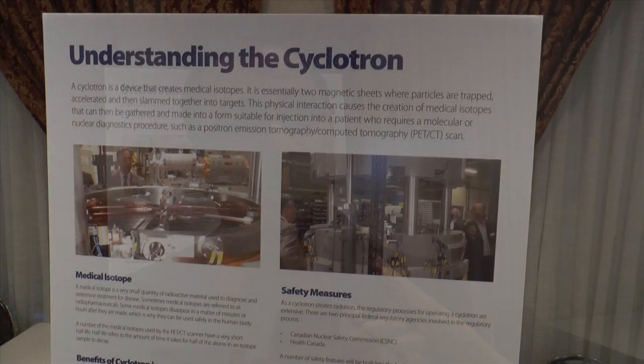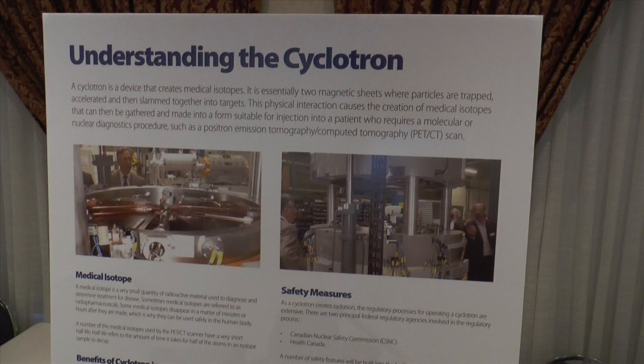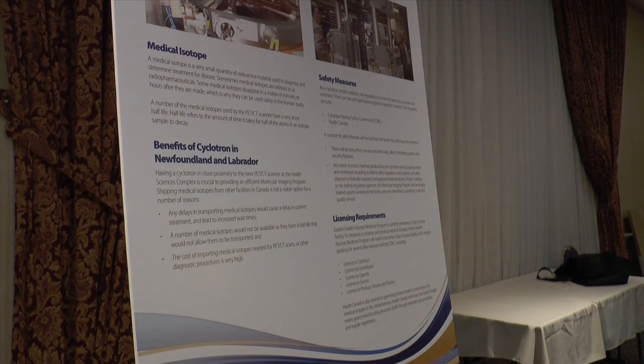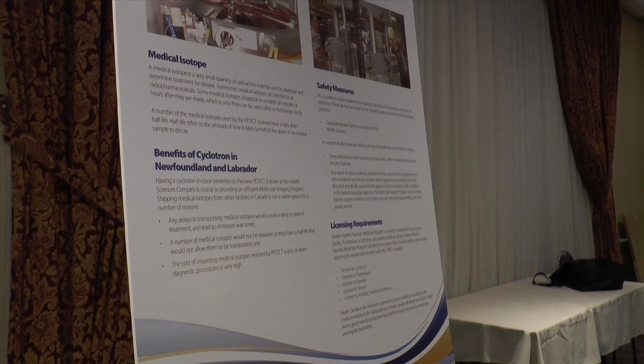A cyclotron is a machine that is a particle accelerator. Basically what happens is you accelerate a proton and it will hit a target. Once it hits this target, it creates FDG, which is going to be the most common PET pharmaceutical that we will produce. So the cyclotron is the means by which we produce it, as opposed to our current medical isotopes where we have to get them shipped in weekly and sometimes daily.